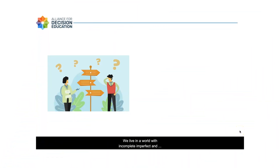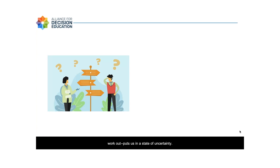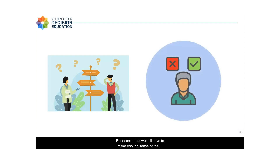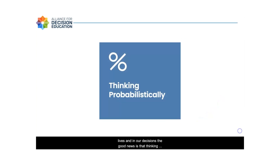We live in a world with incomplete, imperfect, and sometimes misleading information. This problem of not knowing how everything is going to work out puts us in a state of uncertainty. But despite that, we still have to make enough sense of the world around us to make decisions every day. Though there is so much uncertainty to navigate in our lives and in our decisions, the good news is that thinking probabilistically can help.